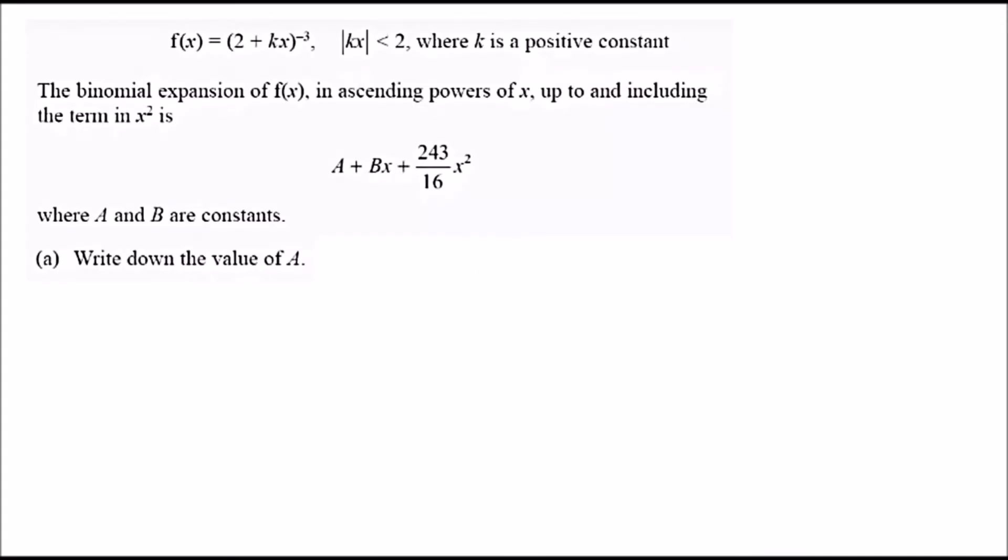Okay, question 2. We're given a function (2 + kx)^(-3), which is a binomial expansion where |kx| < 2 and k is positive. The binomial expansion of the function in ascending powers of x up to and including the x^2 term is given, where A and B are constants. We need to find the value of A.